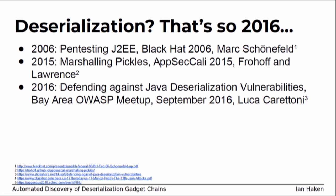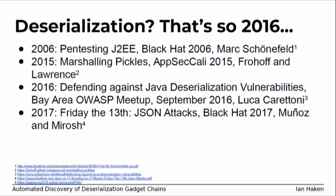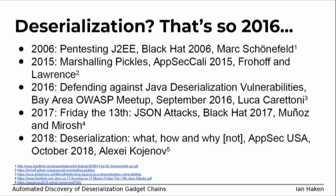My favorite talk from 2016 was probably by Luca at an OWASP meetup, where he did a really good job explaining what these vulnerabilities are, what they look like, what exploits look like, and how you should remediate them. But at last year's Black Hat, Munoz and Maroche gave a survey of JSON parsing libraries showing that all these other libraries can also potentially do unsafe deserialization — just as dangerous as the Java ObjectInputStream. And in October at AppSecUSA, someone is again talking about deserialization vulnerabilities because we haven't solved this yet.